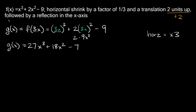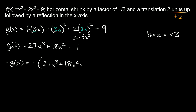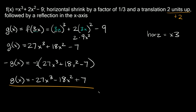The last transformation is followed by a reflection in the x-axis. Remember, for the y-axis we turn all our x's negative, but to reflect something in the x-axis, we have to multiply the whole polynomial by negative one. So we're going to multiply everything by negative one. We have 27x cubed plus 18x squared minus seven, and distributing the negative one gives us g of x is equal to negative 27x cubed minus 18x squared plus seven. So that would be your final answer.